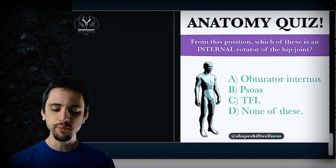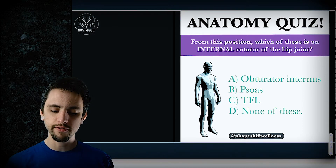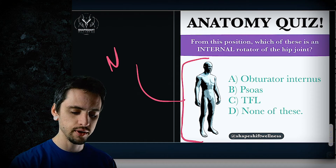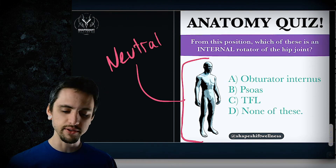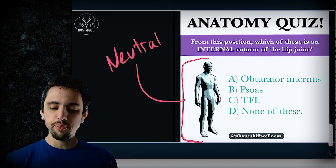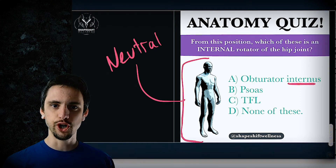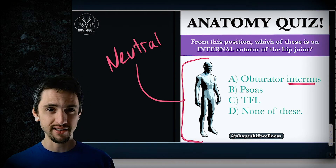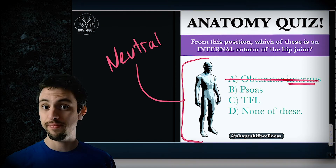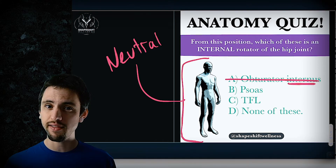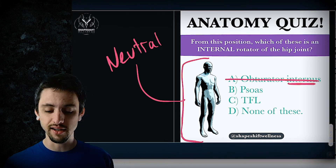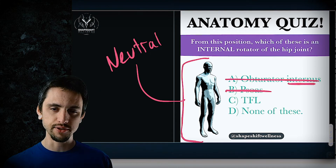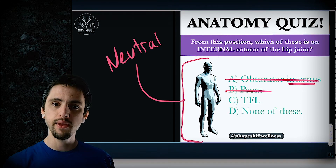So we're wondering: which of these muscles, from a neutral position, is an internal rotator of the hip? I put obturator internus because it has the word 'internus,' and I thought that would confuse people — but that is actually an external rotator of the hip, it's on the back side. The psoas is not an internal rotator either; it is an external rotator that connects to the lesser tubercle of the femur.